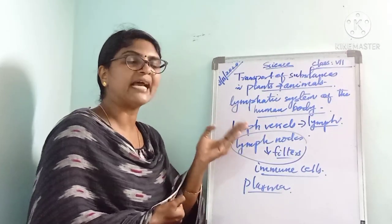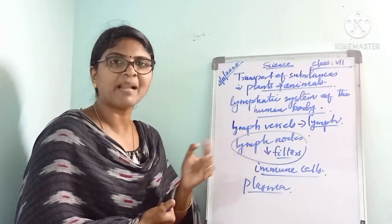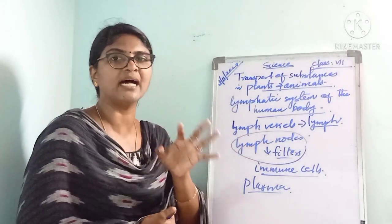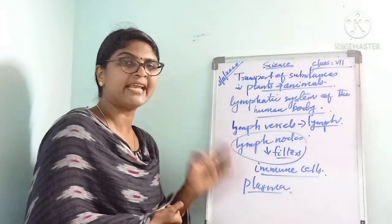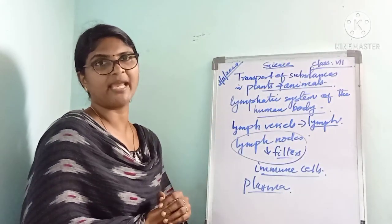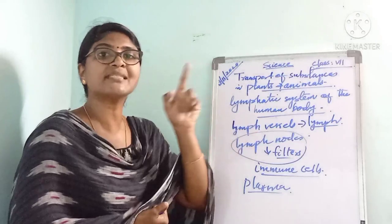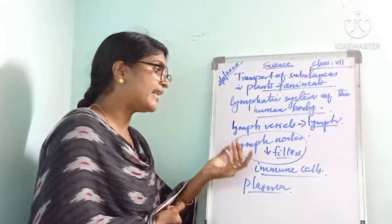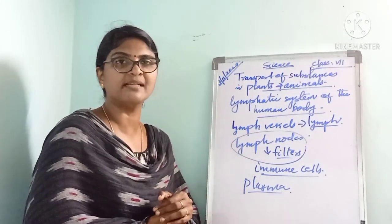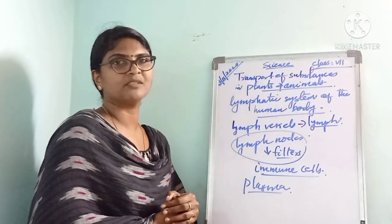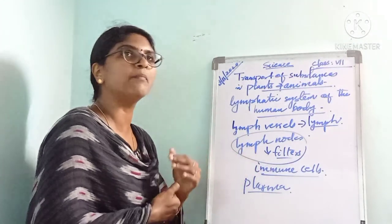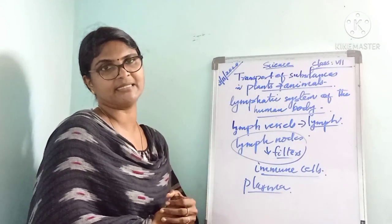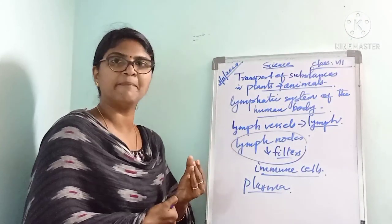To summarize: as blood flows through the capillaries, some plasma comes out of the walls and enters the lymph vessels, from where it drains back to the blood vessels. Before returning to the circulatory system, the fluid is filtered in the lymph nodes, which contain immune cells that protect the body from disease-causing organisms and harmful substances.